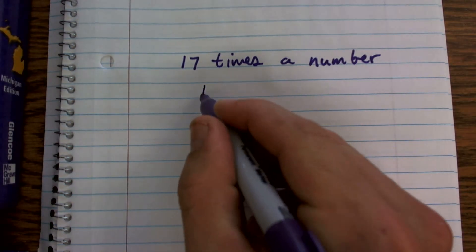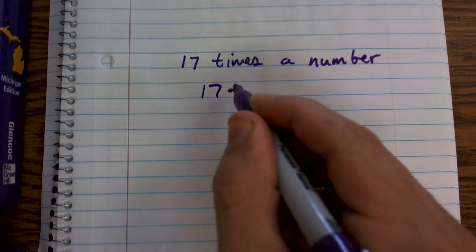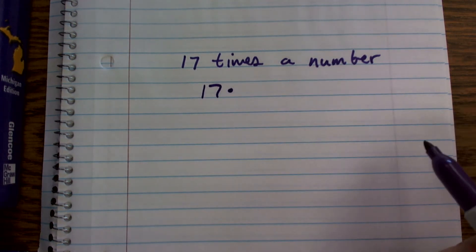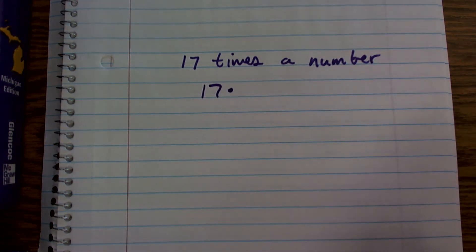So I'm going to be 17 times what? It says a number. I don't know what that number is, right? That number could be 5, it could be negative 20, it could be 1 half. It could be any sorts of things.